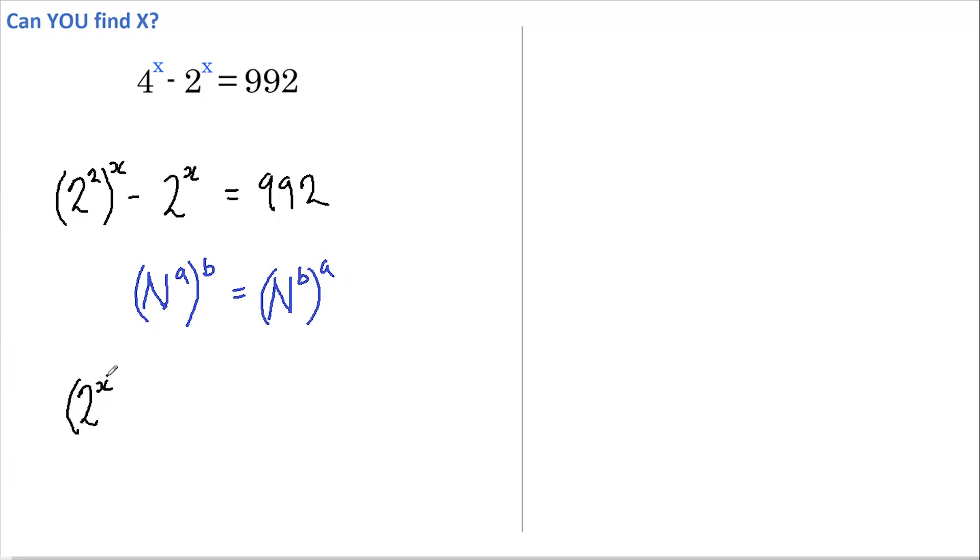If we do that in the above equation, we get 2 to the power of x all squared minus 2 to the x equals 992. And if we let u equal 2 to the x, then we get u squared minus u minus 992 equals 0.